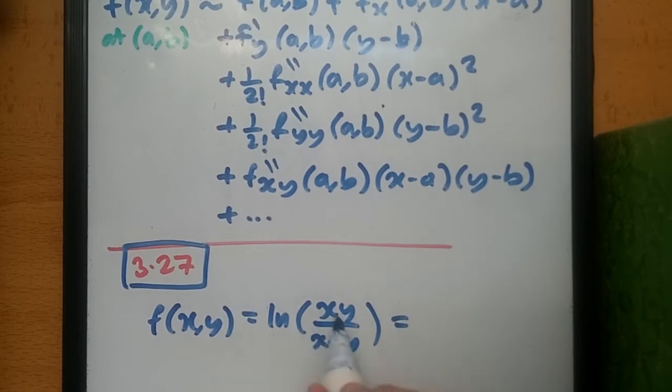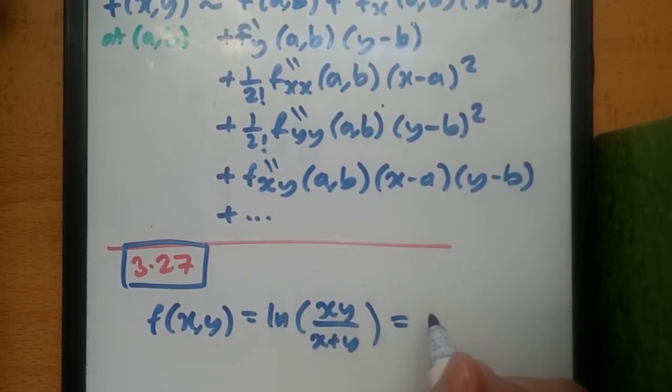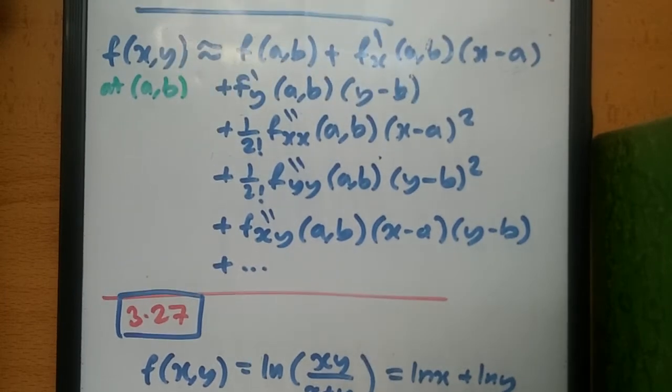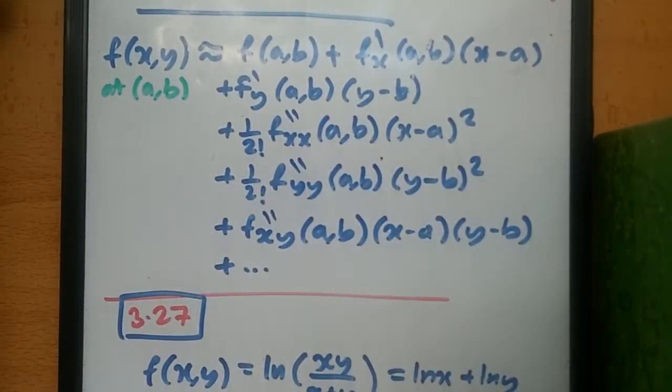Okay, so we can actually simplify this directly. Using the methods, using the properties of logs, this would turn out to be log x plus log y. And because it's on the bottom line, this would be minus log (x+y). Okay, so this is another way to do it.